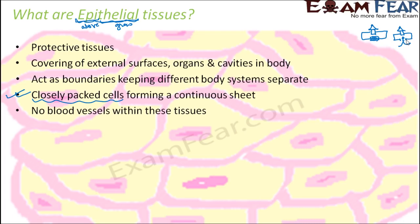No blood vessels are present within epithelial tissues — they are non-vascular tissues. What is the purpose of blood vessels? Blood transports nutrients and water through different parts of the body. Epithelial tissues do need nutrients and water, but they get them through diffusion — by diffusion through their walls, they can exchange nutrients and water. So they do not need blood vessels.